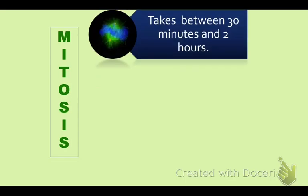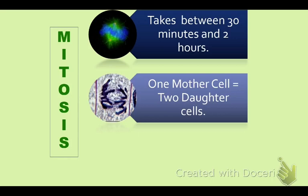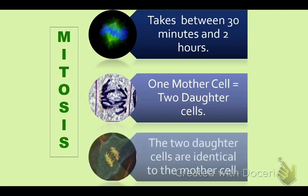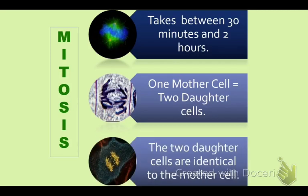Overall, the process of mitosis takes between 30 minutes and two hours. As your skin cells are replicating — because skin cells die and slough off — new ones are being made every 30 minutes to two hours. One parent cell or mother cell is turned into two identical daughter cells, and those identical daughter cells are also identical to the mother cell.